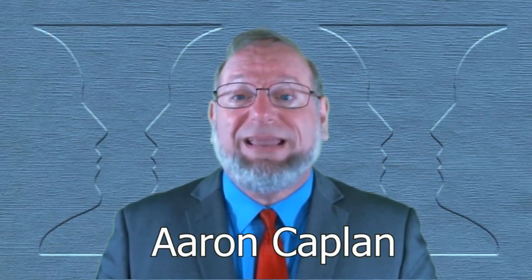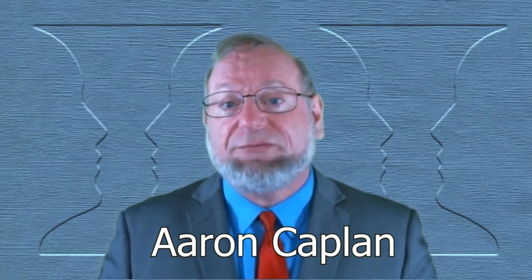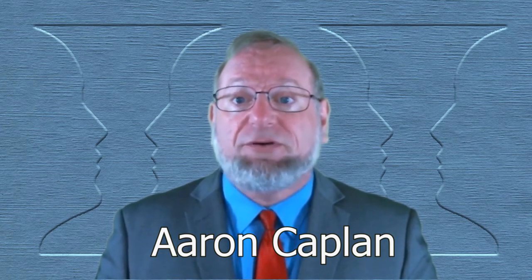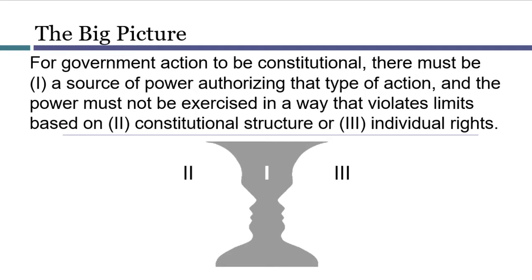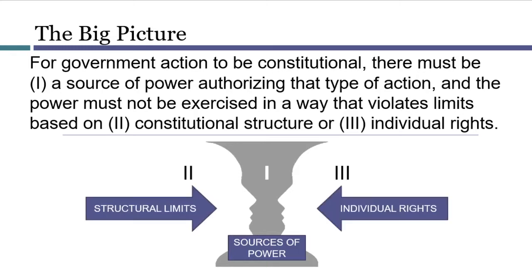The previous video talked about the interaction of powers and limits for the federal government. For state governments, the general approach is similar, but there are some important differences. Our big picture remains the same, with three main categories of constitutional conversation: a source of power, structural limits, and individual rights. These categories are the same whether we're talking about the federal government or state governments.